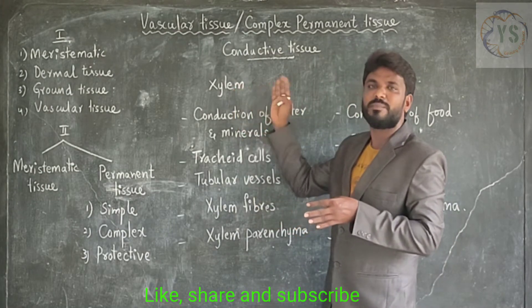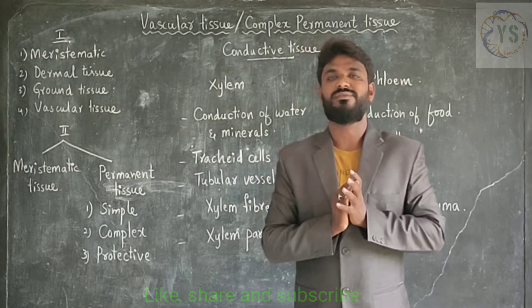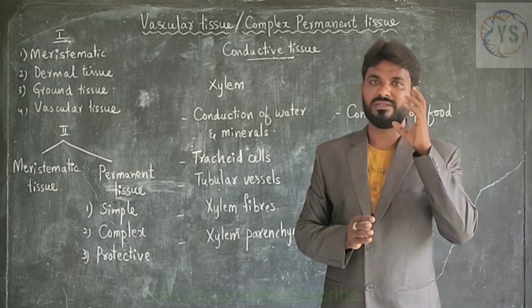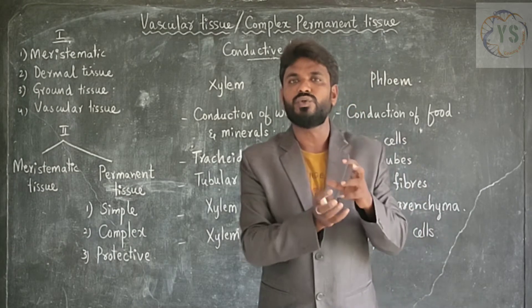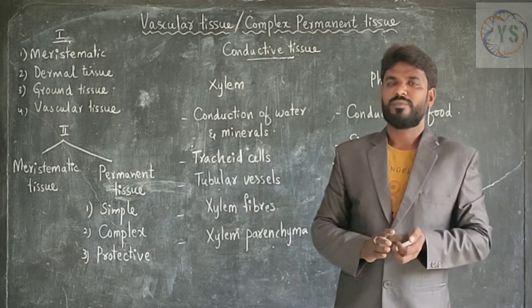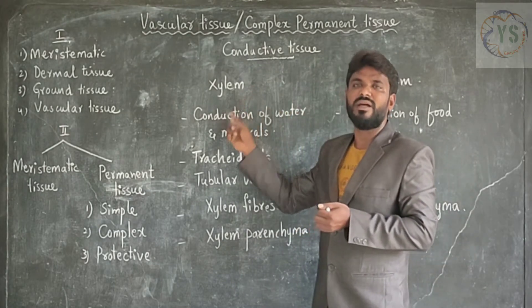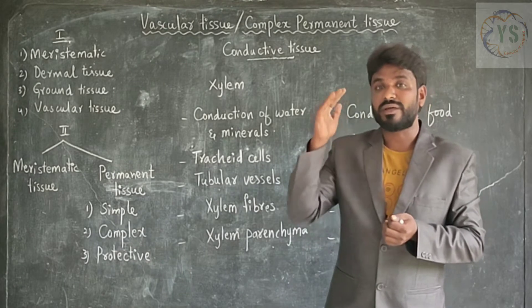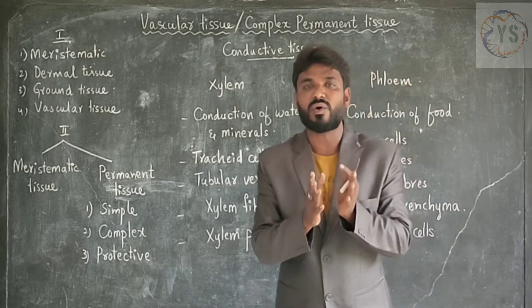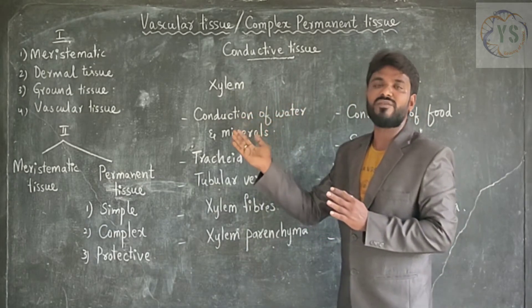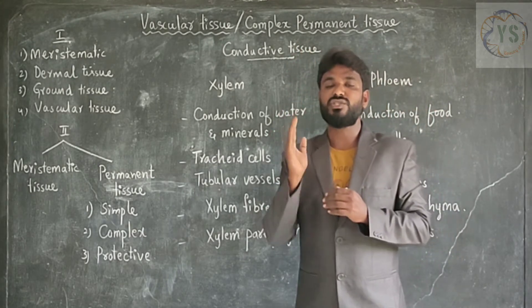First, xylem. Xylem is a part of vascular tissue. It helps in conduction of water and minerals. Plants require water for growth, development, and carrying out all metabolisms. The water is available in the ground, received by roots, and must be supplied to all parts of the body. Xylem helps in transportation of water and minerals from the ground to all parts of the body. Xylem is composed of many kinds of cells, as it is a complex permanent tissue.